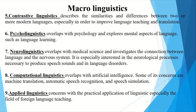The fifth area is contrastive linguistics, which describes the similarities and differences between two or more modern languages, especially in order to improve language teaching and translation. The sixth is psycholinguistics, which overlaps with psychology and explores mental aspects of language, such as language learning. At number seven, we have neurolinguistics, which overlaps with medical science and investigates the connection between language and the nervous system. It is especially interested in the neurological processes necessary to produce speech, sound, and language disorders.